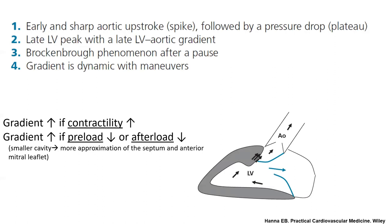A hallmark feature of dynamic LV-OT obstruction is that it is dynamic — you can do maneuvers to make the gradient worse or better. There are three physiologic features that change the gradient. The gradient moves in the same direction as contractility: increased contractility raises the gradient. The gradient moves in the opposite direction to both preload and afterload: reducing preload or afterload worsens LVOT obstruction because it reduces LV cavity size, causing more mitral valve drag and more approximation of the septum and anterior mitral leaflet.